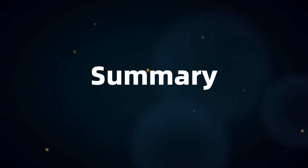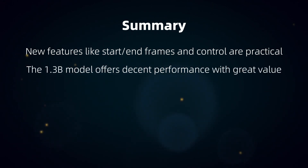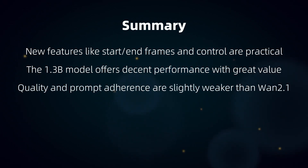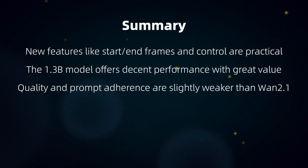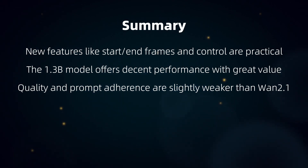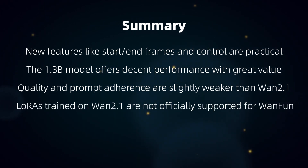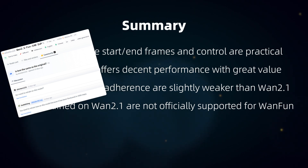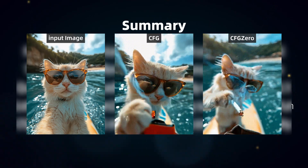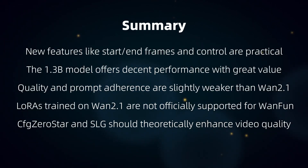To summarize the WAN Fun models: new features like start/end frames and control are practical. The 1.3b model offers decent performance with great value. However, when generating videos from text or images, its quality and prompt adherence are slightly weaker than WAN 2.1. In native Comfy UI, text-to-video without a start image often fails — likely a bug. If you've got spare disk space, keep WAN 2.1. Model developers state that LoRas trained on WAN 2.1 are not officially supported for WAN Fun, though some can still be used. CFG ZeroStar and SLG (skip layer guidance) should theoretically enhance video quality, but I found their effects limited or even detrimental, so they're not included in the default workflow. Feel free to try them yourself.